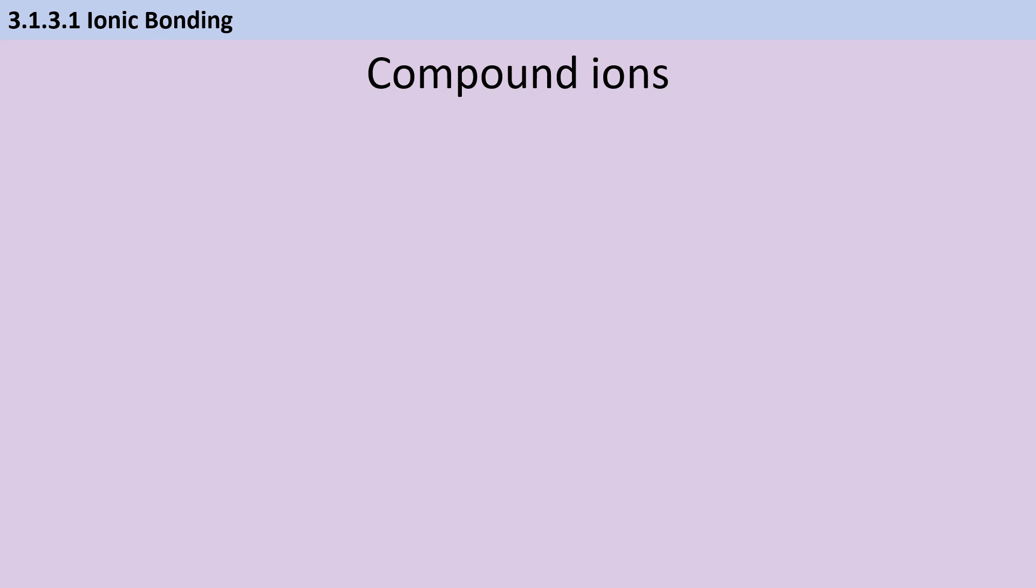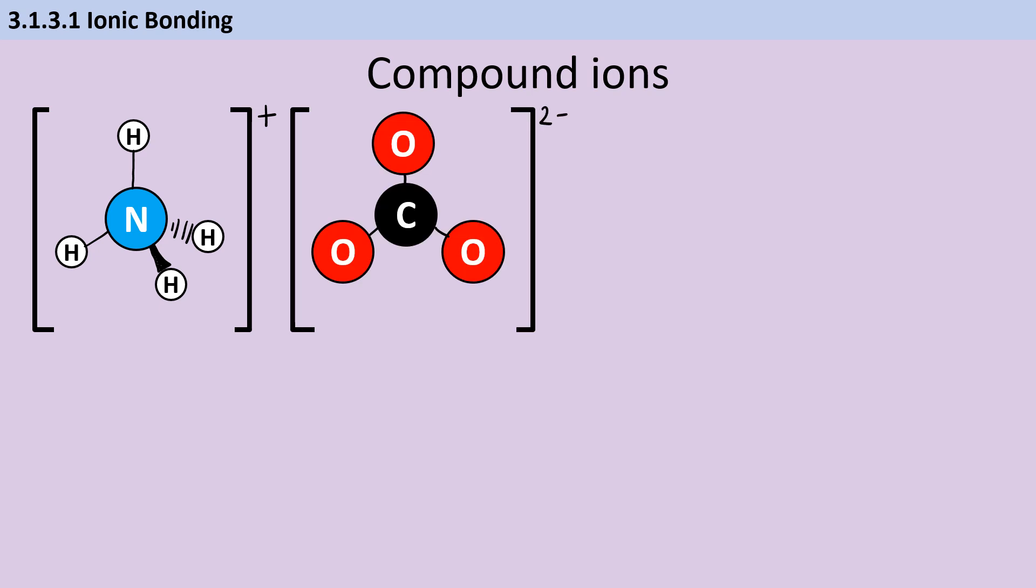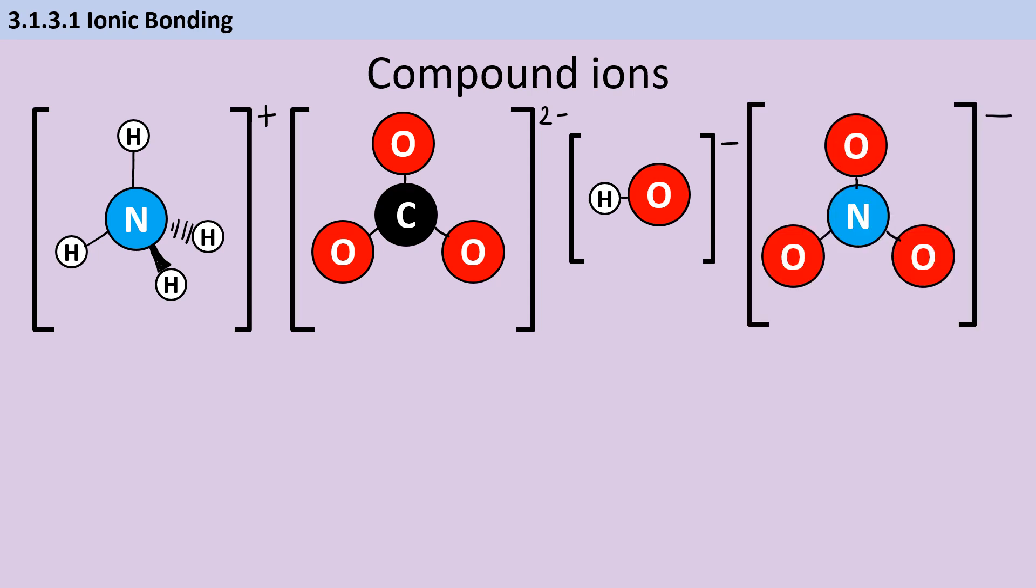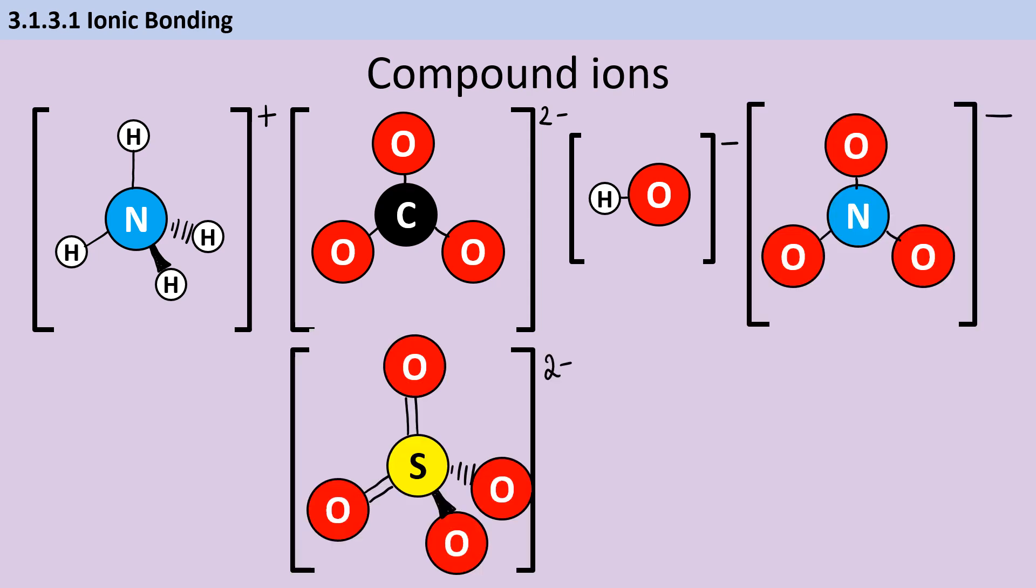It's important that you're able to work out what the formula of an ionic compound would be, and in order to do this you need to be confident in naming your compound ions, specifically the ammonium ion, which is NH4+, the carbonate ion, which is CO3 2-, the hydroxide ion, OH-, the nitrate ion, NO3-, and the sulfate ion, SO4 2-.